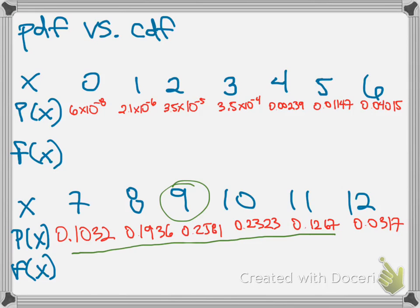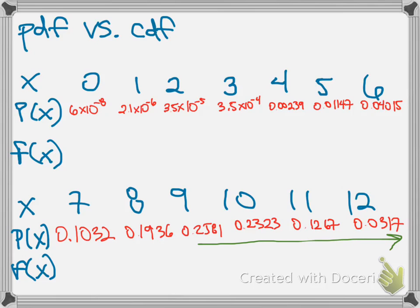After hitting that high point of about 26% at 9 makes, the probabilities begin to decrease. As you increase the number of makes further, there ends up being only a 3% chance she would make all 12 shots. This makes sense: the probability of an outcome increases as we approach the expected number of makes, and then decreases as we surpass it. So that's the PDF function.